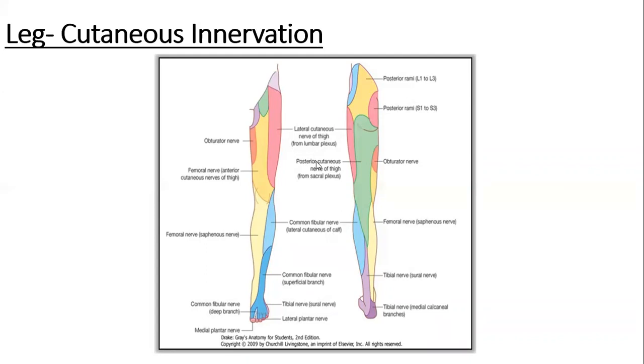So lateral sural cutaneous nerve arises from the common peroneal or common fibular nerve. It gives off a sural or peroneal anastomotic branch to the sural nerve and it ends by supplying over the anterolateral and posterolateral aspects of the upper leg. Why upper leg? Because in the lower leg it is replaced by other nerves.